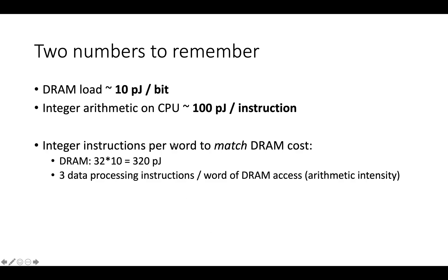One implication: how many integer instructions do you need in an application for the energy cost of instructions — which can be optimized through accelerator design — to equal the energy cost of DRAM access, which you're pretty much stuck with? DRAM takes about 10 picojoules per bit, so 32 bits is around 300 picojoules. An integer arithmetic instruction is about 100 picojoules. So you need about three data processing instructions per word of DRAM access — roughly three operations per word — which is the arithmetic intensity needed for compute and DRAM energy costs to be balanced.